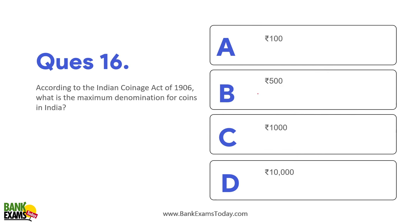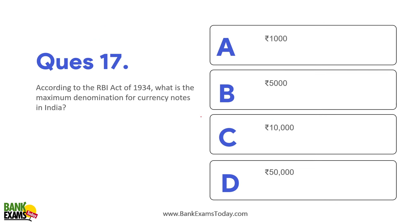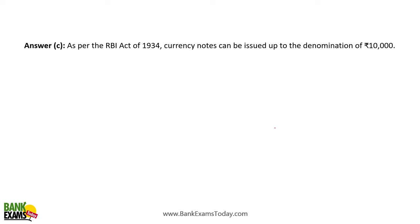According to the Indian Coinage Act — and this is an important question from this session — the maximum denomination for coins in India is 1000 rupees. A maximum 1000 rupee coin can be issued and can be in circulation. According to the RBI Act 1934, the maximum denomination for currency notes in India is 10,000 rupees.